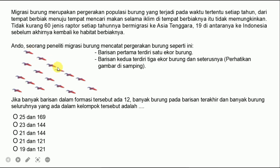Baris keempat ada tujuh. Jika banyak barisan dalam formasi tersebut ada dua belas — ini misalkan dalam barisan ini ada dua belas baris, ini kan baru ada empat — sampai dua belas barisan formasi burungnya. Yang ditanyakan adalah banyak burung pada barisan terakhir dan banyak burung seluruhnya dalam kelompok tersebut.